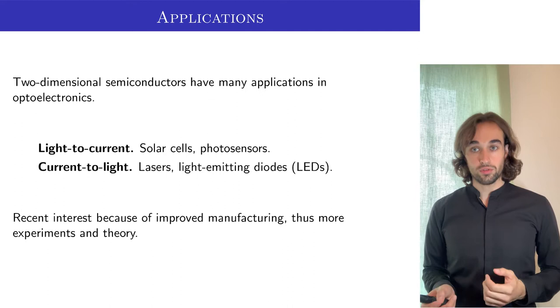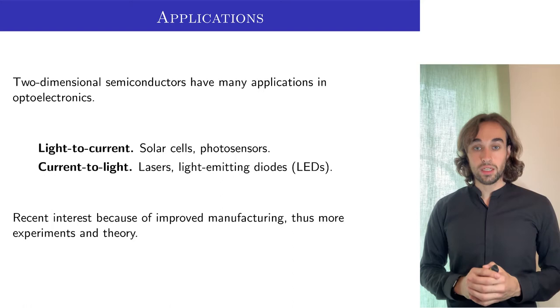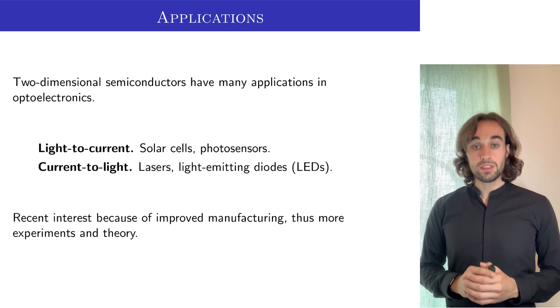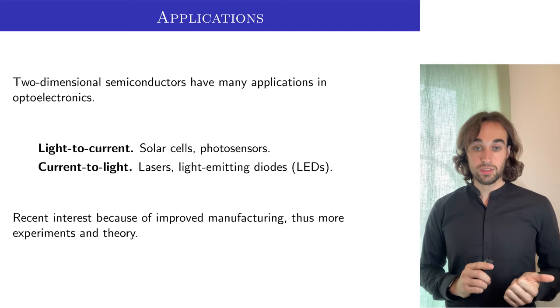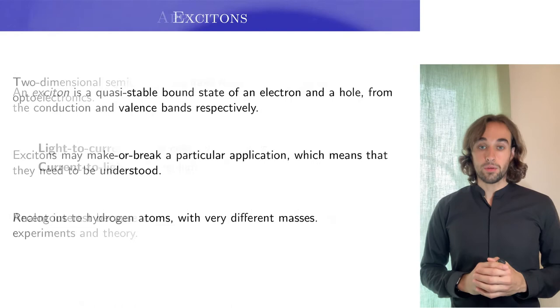These devices are characterized for converting light to electric current, like solar cells and photosensors, and also electric current to light, like lasers or LEDs. These are just four examples of widely used technologies, so any improvements to any of them would have very important consequences. The recent interest in these materials is because of improved manufacturing, which means it is cheaper and easier to fabricate these samples. Therefore, more experiments and more theory can be performed.